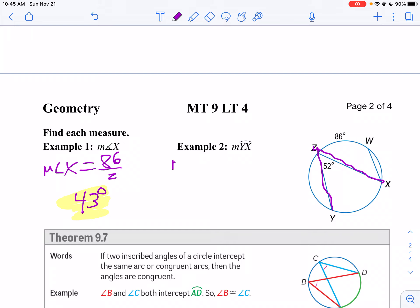So the measure, so 52 degrees is going to be half of arc yx. So I multiply both sides by 2. So we get 104 equals the measure of arc yx. And there we have it.